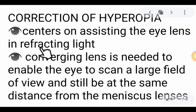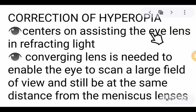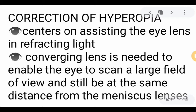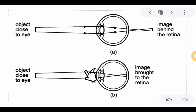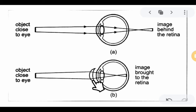The correction of hyperopia focuses on assisting the eye lens in refracting light, since the problem is that it refracts too little light. The lens used is a converging or convex lens, which enables the eye to focus properly. Placing a convex lens in front of the eye brings the image forward onto the retina, instead of it falling behind the retina.